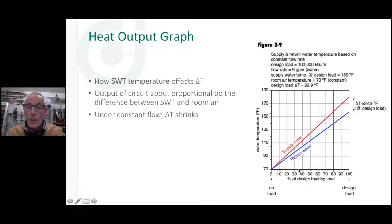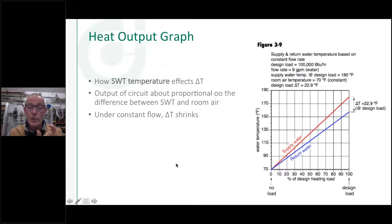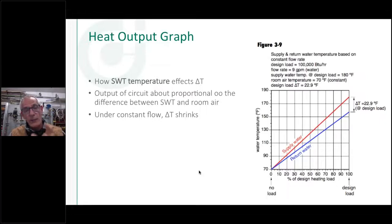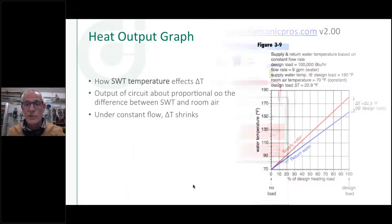Nowadays we can pair this with a modulating boiler that adjusts its output to match the changing load. That's much nicer than fixed on/off cycling. The outdoor reset control modulates the burner down and matches the load by adjusting supply temperature rather than cycling. This keeps a stable, parallel output curve as conditions change.